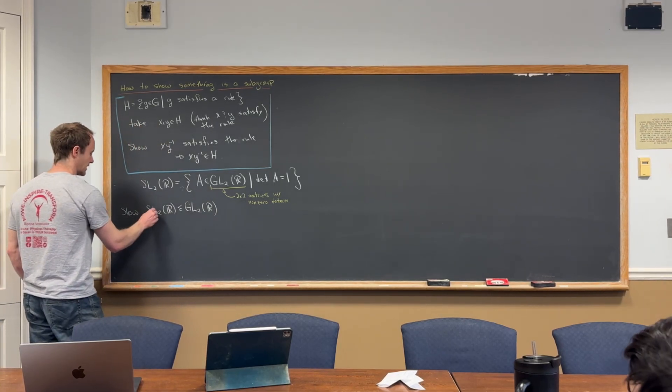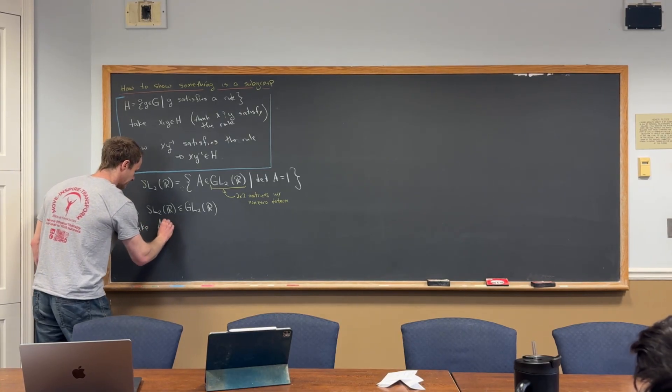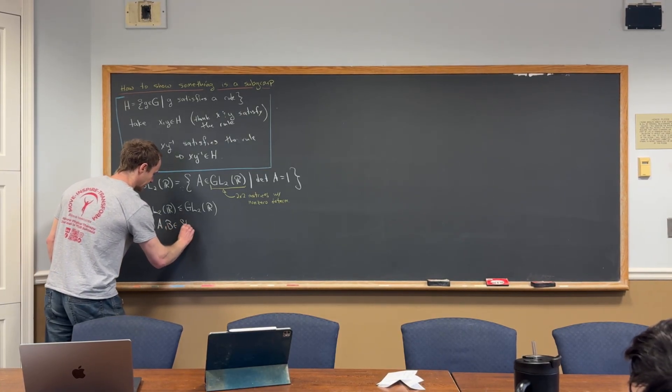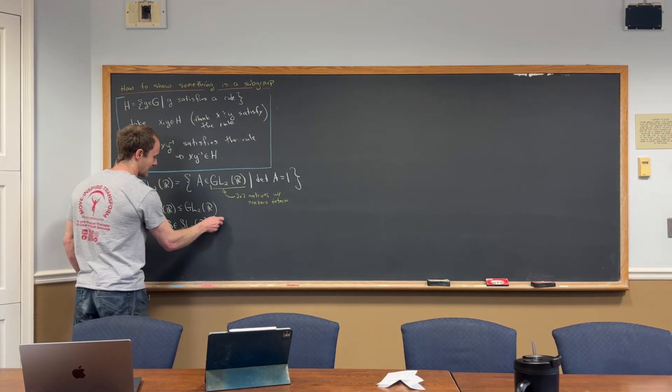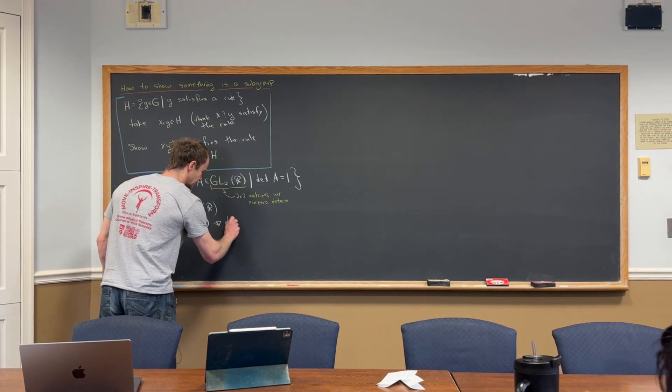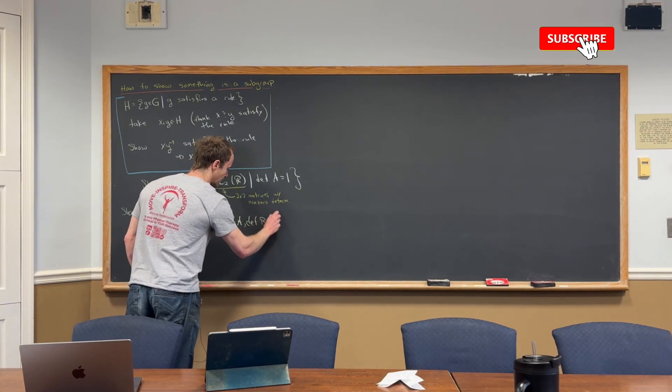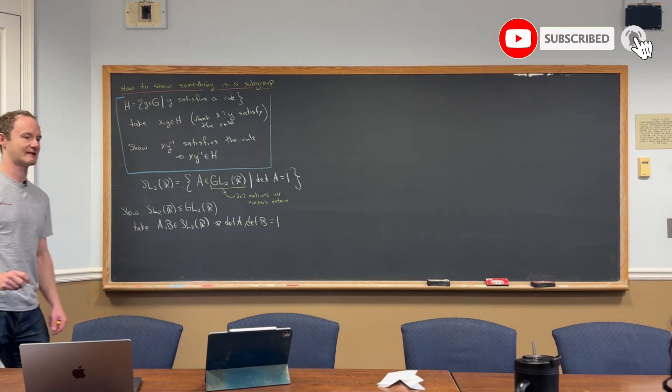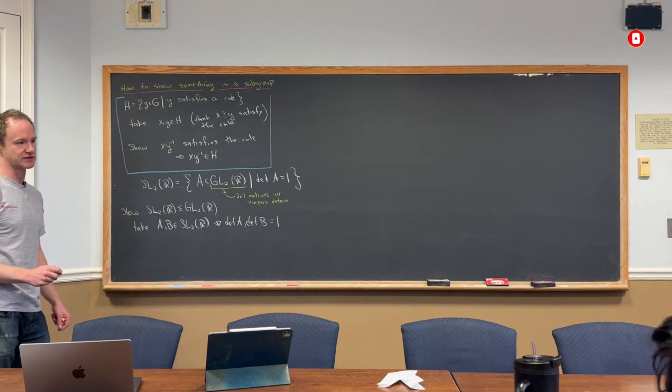So how are we going to do that? Well, let's take A and B inside of SL(2,R). But let's observe that that means that the determinant of A and the determinant of B are both equal to one, because that's what it takes to be inside of this set—you have to have determinant one.